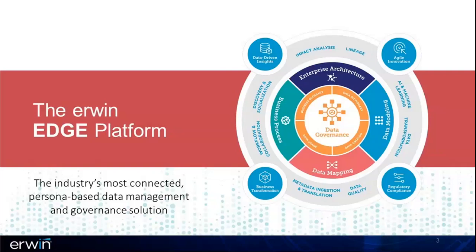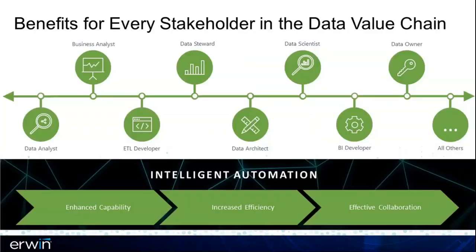All of this is built into a platform that gives you everything you need to bring different stakeholders from across the organization together to work effectively and efficiently. The idea is to get every stakeholder in the data value chain working from the same page, informing each other, providing context and visibility into the role that they play and the requirements that they have — all built around intelligent automation that will enhance capability across the organization, increase efficiency, lower costs, and make sure you're collaborating effectively and really seeing the return on the opportunity that your data assets represent. With that, let's pass it over to Donna and get into the real meat of what we're talking about today.